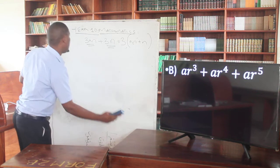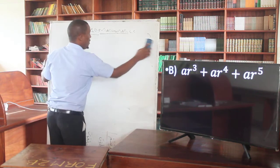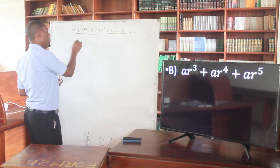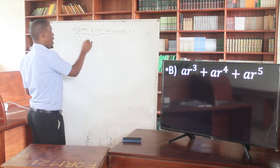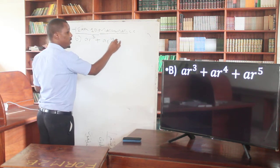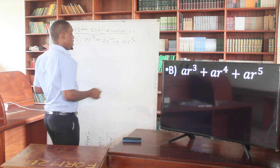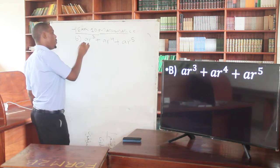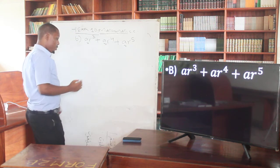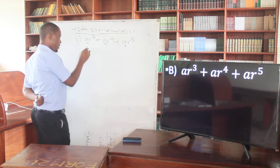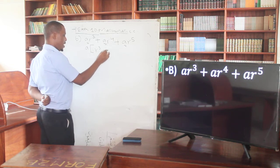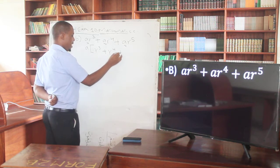Moving to example B. We need to check on this case. In the case of b, we have a·l³ plus a·l⁴, then plus a·l⁵. If you try to see what is common here, common here, and common here — the first thing we realize is 'a', so I can factor it out and introduce the brackets. I'm going to have a, then into bracket: l³ plus l⁴ plus l⁵.